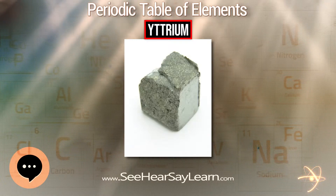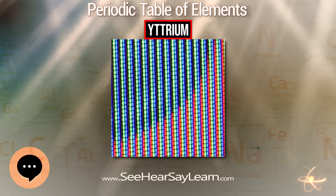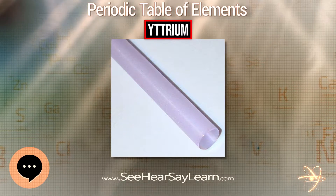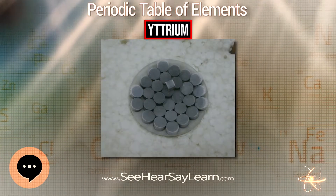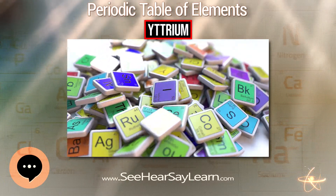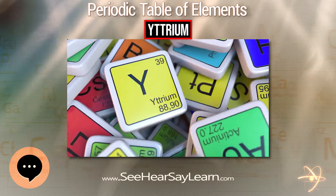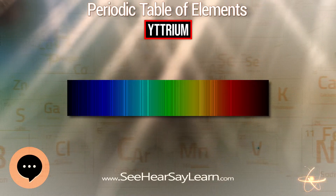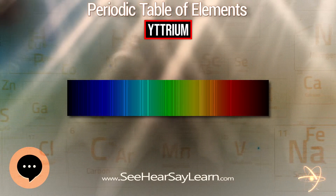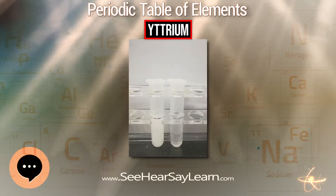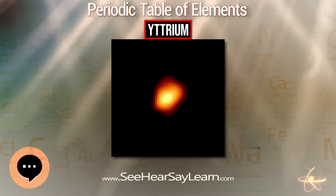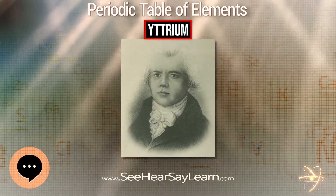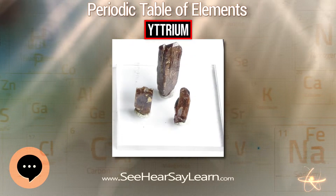Yttrium is found in most rare earth minerals and in some uranium ores, but is never found in the Earth's crust as a free element. About 31 ppm of the Earth's crust is yttrium, making it the 28th most abundant element — 400 times more common than silver. Yttrium is found in soil in concentrations between 10 and 150 ppm and in seawater at 9 ppt. Lunar rock samples from the Apollo project have a relatively high yttrium content. Yttrium has no known biological role, though it tends to concentrate in the liver, kidney, spleen, lungs, and bones; normally as little as 0.5 mg is found in the entire human body.